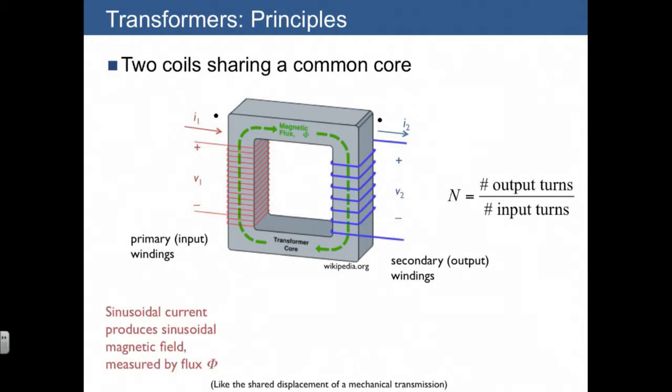The way a transformer works is that a sinusoidal current is applied across the primary winding, and that produces a sinusoidally varying magnetic field.